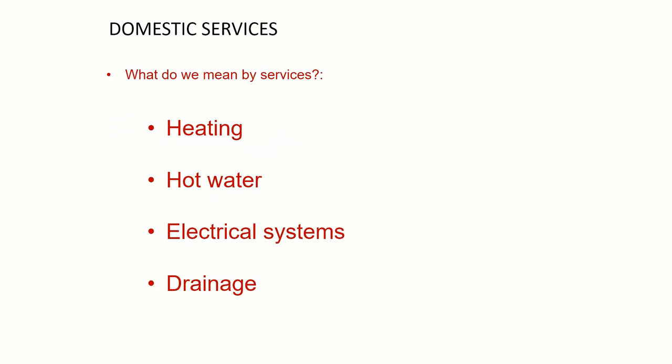From the last lecture we discovered that we needed heating and hot water, electrical systems, water supplies and drainage. We'll go through some of these systems and look at the specifics of how they might be put in place, what the construction is behind them. We'll cover heating first.